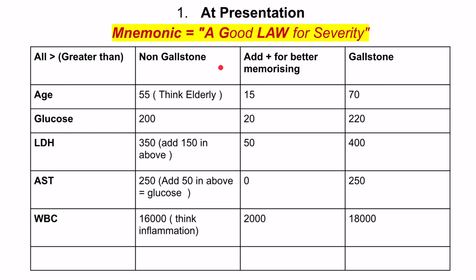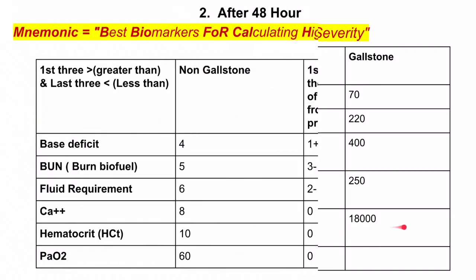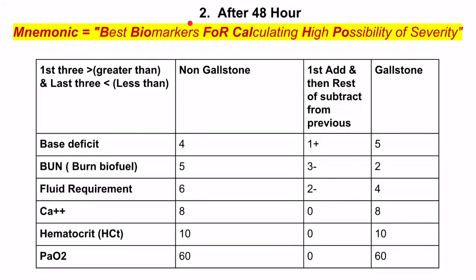For gallstone pancreatitis, we add numbers to those of non-gallstone pancreatitis: 55 plus 15 equals 70; 200 plus 20 equals 220; 350 plus 50 equals 400; 250 plus 0 equals 250; and 16,000 plus 2,000 equals 18,000.